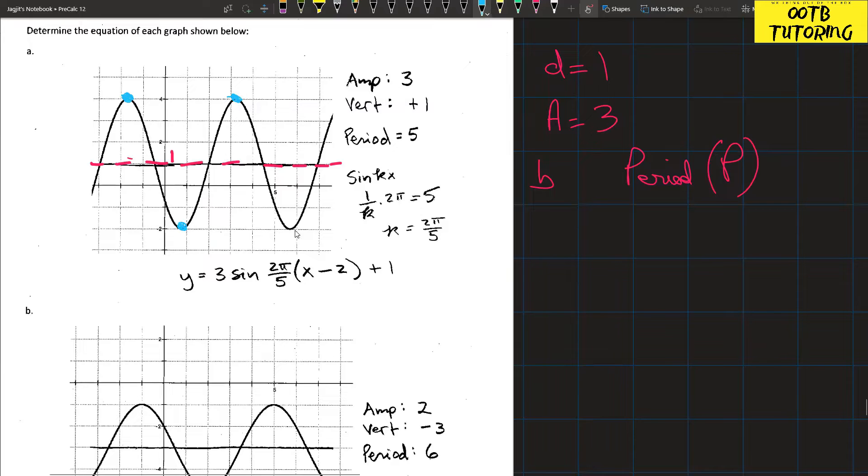We can pick this point and this point and subtract them, or you can pick a point where it was at the center going up, which is this, and the next point where it's at the center going up, not where it's going down, which would be this. Or you can do this point minus this point.